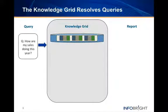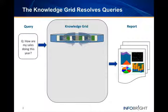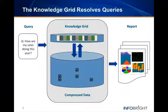The summary information stored in the Knowledge Grid is used to answer queries directly, or to narrow down the relevant data packs, reducing the overall I/O by only decompressing and reading data relevant to the query.